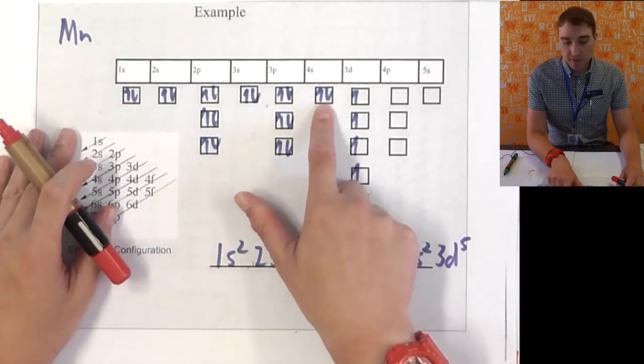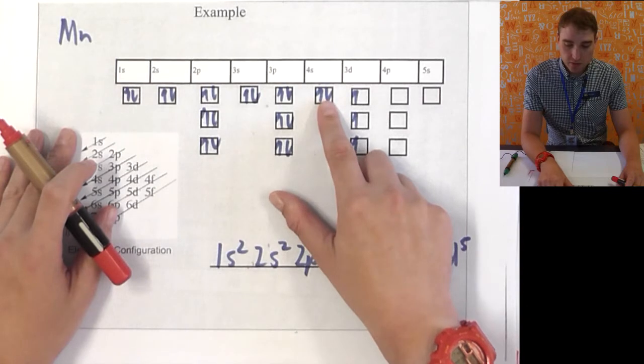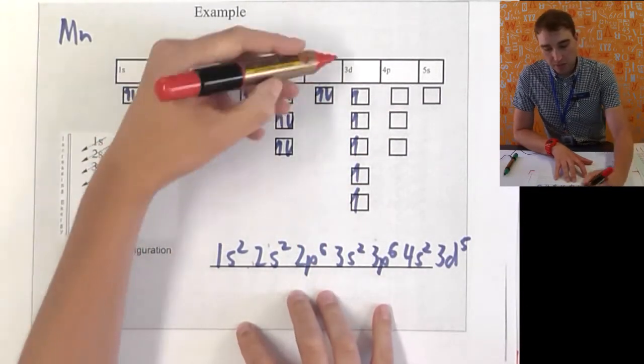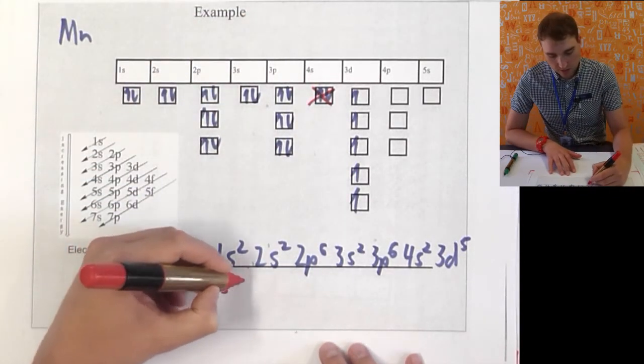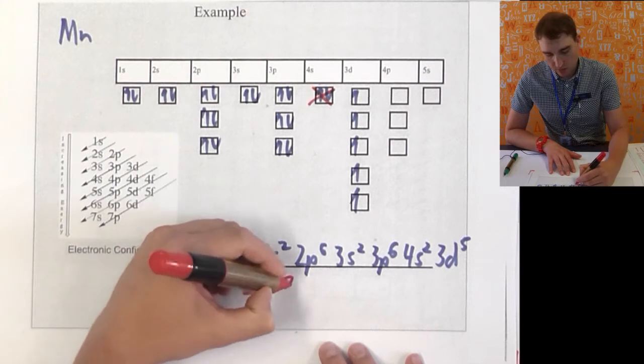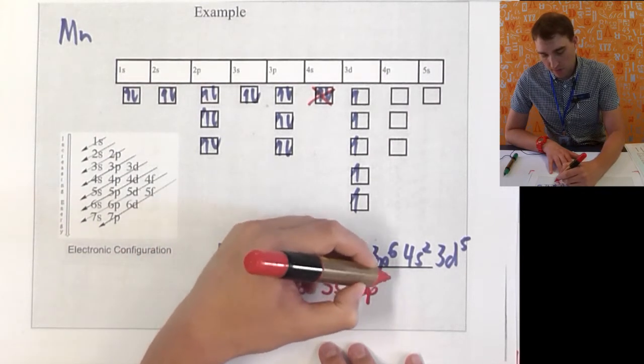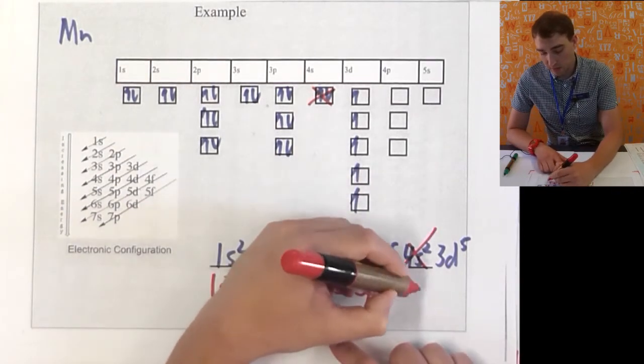Problem is, it's got these 4s electrons that are sitting there. When it's reacting, it's going to lose those two 4s but keep the 3d because that's stable. So, when it's losing electrons, it's losing the 4s. So, 1s2, 2s2, 2p6, 3s2, 3p6, no 4s anymore. Get rid of that. 3d5.